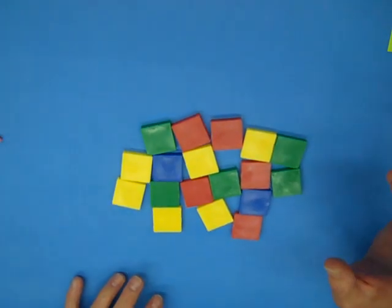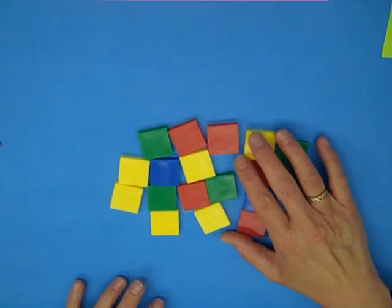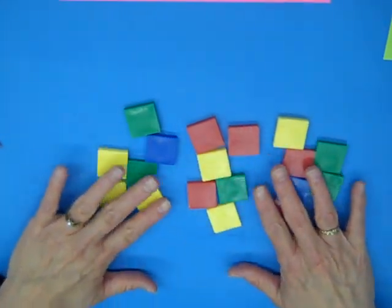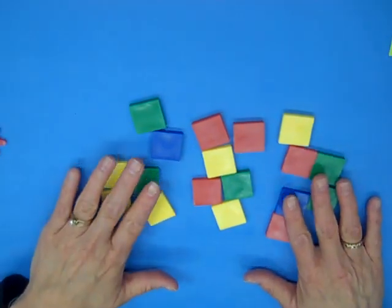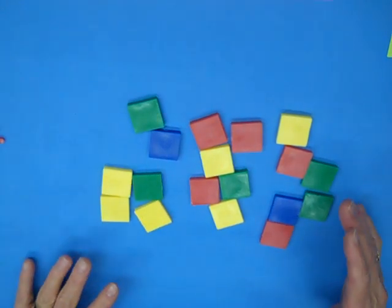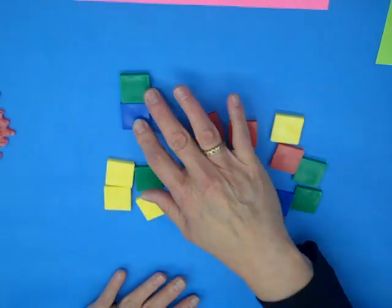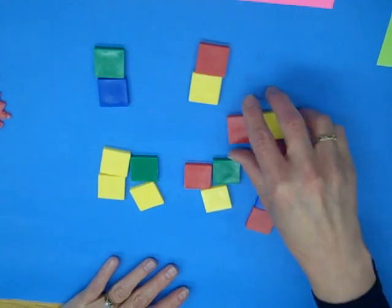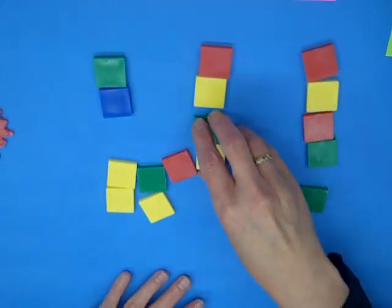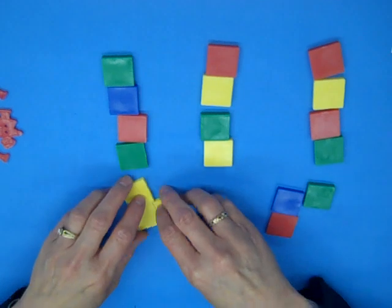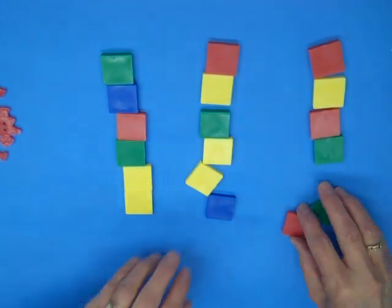So if we were going to do two thirds as our fraction, then we would have to figure out, okay, how am I going to get three groups? Some of the kids are going to say, well each one gets two and then they keep adding on. Others might count the whole set and divide it.